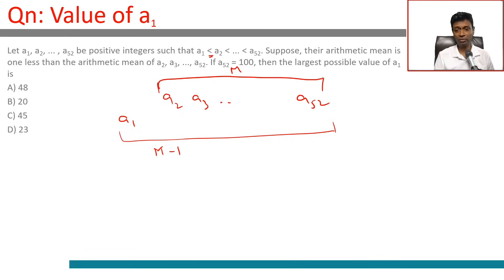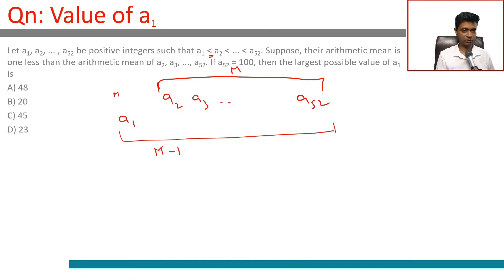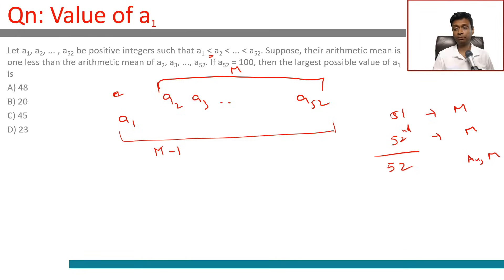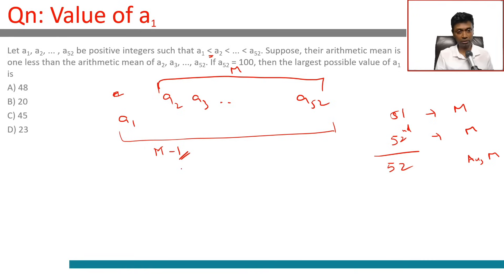Think about it this way: a2 to a52 have arithmetic mean m. When a1 is included, if a1 were also m, then the average of all 52 would remain m. But the average falls by 1, meaning the total falls by 52 — as if one was taken from each of the 52 entities. That tells us a1 should be m minus 52.